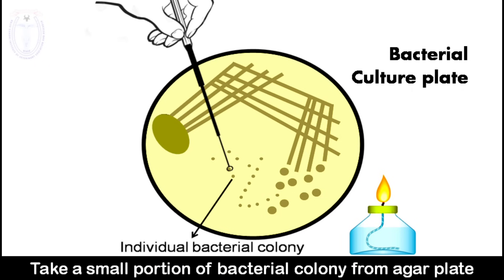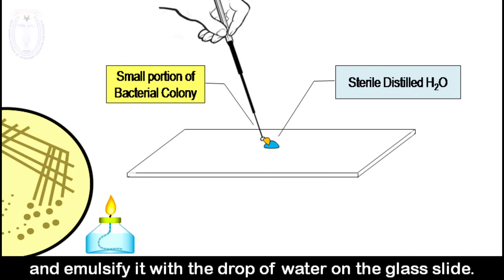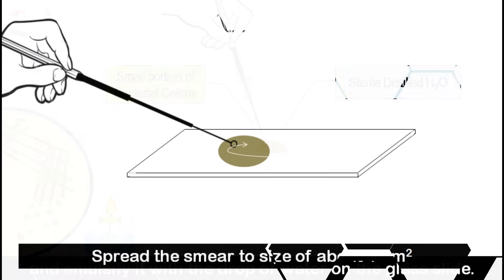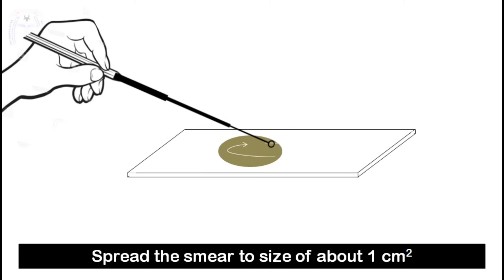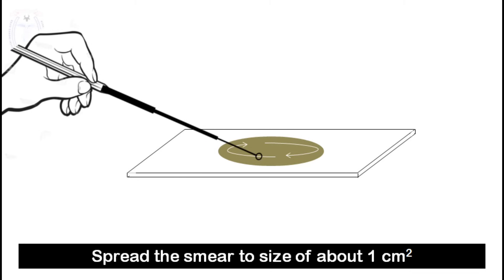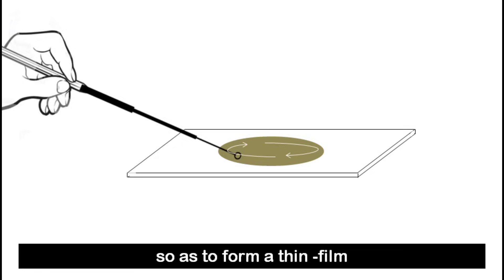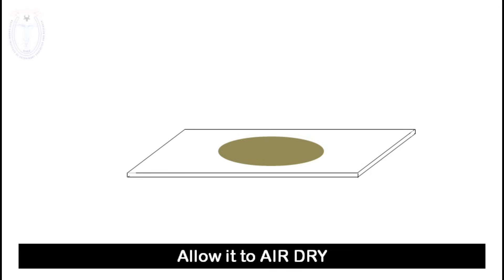Take a small portion of the bacterial colony from the culture plate and emulsify it with the drop of water on the glass slide. After emulsifying, spread the smear to the size of about one centimeter square so as to form a thin film. After spreading, allow it to air dry — it may take two to three minutes.